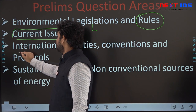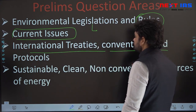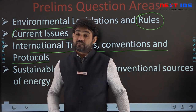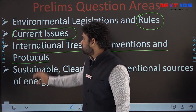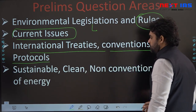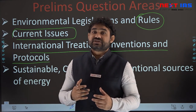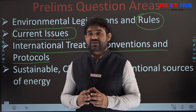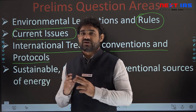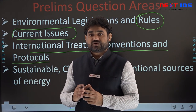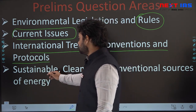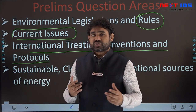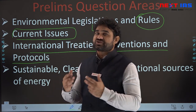International treaties, conventions, and protocols are a significant area. In one year they may not ask questions, but the next year three to six questions may come from this area — including CITES (Convention on International Trade in Endangered Species of Wild Flora and Fauna), Convention on Migratory Species, Ramsar Convention, Convention on Biological Diversity, Stockholm Convention, Rotterdam Convention, and Basel Convention. These international agreements-related questions keep coming.